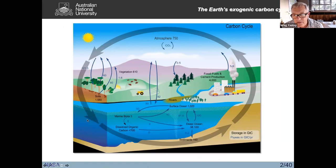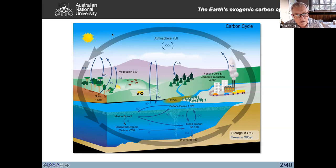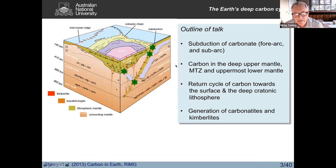Everyone is aware of the exogenic or surface carbon cycle, where carbon is cycled in various forms between the atmosphere, the oceans, the lithosphere, the biosphere, and so forth. This has received a lot of attention in recent years because it essentially mitigates climate, and we know that anthropogenic additions of carbon dioxide to the atmosphere are changing the climate. This is the shallow carbon cycle operating on a time scale of hundreds to thousands of years. But the deep carbon cycle is much slower, much deeper, operating on timescales of hundreds of millions of years, and is responsible for a lot of processes in the Earth, probably contributing to long-term climate change as well.